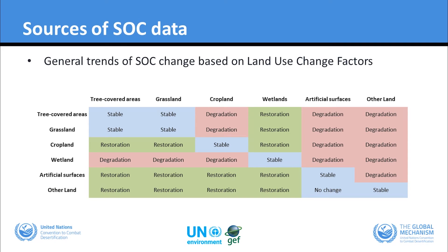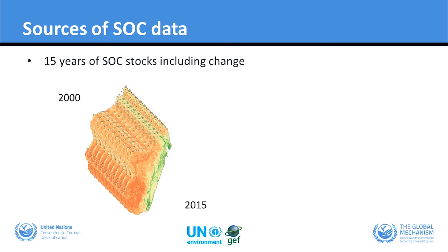In the matrix, if it's blue it is considered no change; if it's red, there is a loss; and if it's green, there is a gain. From this we end up with 15 years of soil organic carbon stocks which include the change for each country involved.